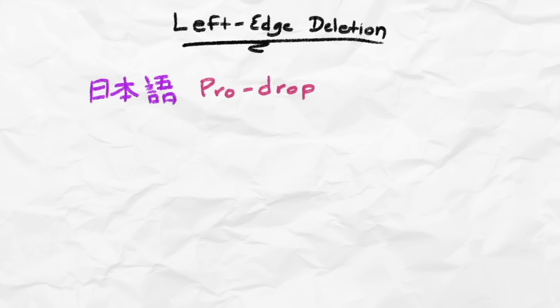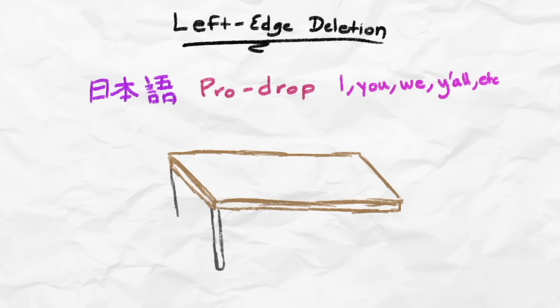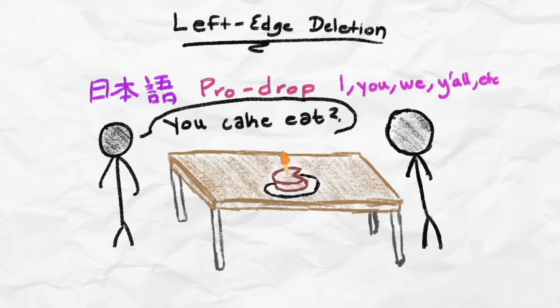Another innovation that we have is left-edge deletion. If you speak other languages like Japanese, you may know that it's a pro-drop language, which is a language that emits pronouns. For example, if I see a cake that is half eaten on a table and there's only another person in the room with me, I could say, you cake ate?